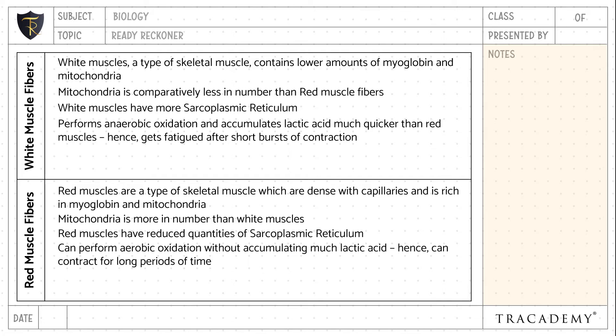Red muscle fibers can perform aerobic oxidation without accumulating much lactic acid, hence can contract for long periods of time. Fast rate of contraction is seen with white muscle fibers, whereas slow rate of contraction is seen with red muscle fibers. An example of a white muscle fiber is the muscles of the eye, whereas an example of a red muscle fiber is the extensor muscle.